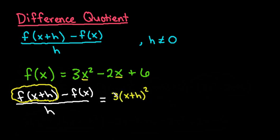So instead of writing 3x squared, I'm going to write 3 times x plus h squared minus 2 times x plus h plus 6. So this part right here would give me the f of x plus h.